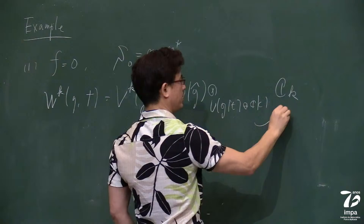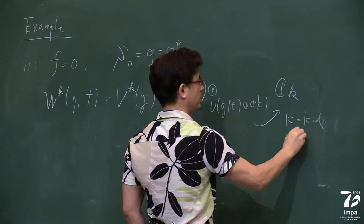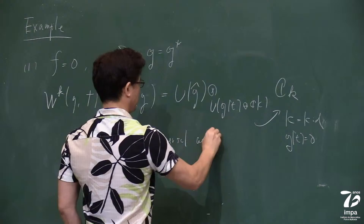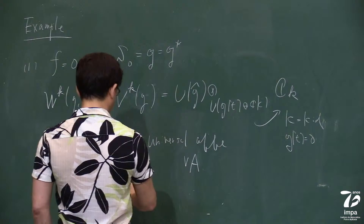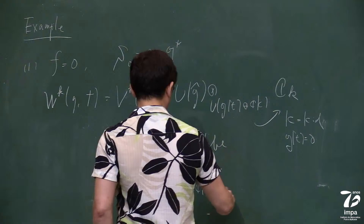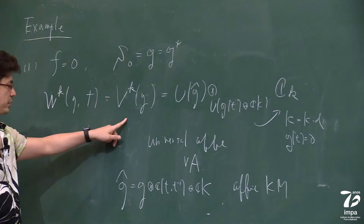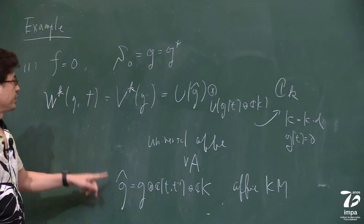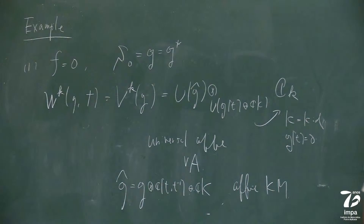G-hat is the affine Kac-Moody algebra. Because representations of this vertex algebra are the same as representations of G-hat modules, we can say that the W-algebra contains the affine Kac-Moody algebra as a special case.